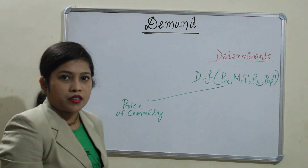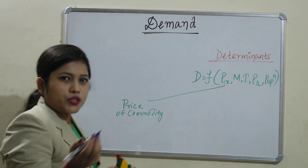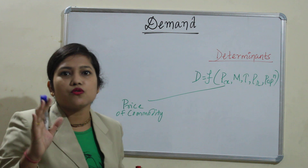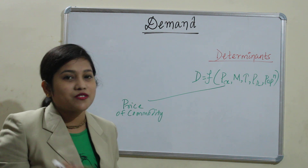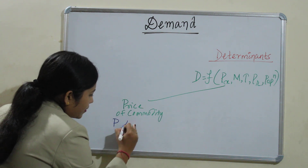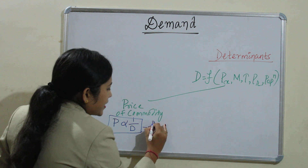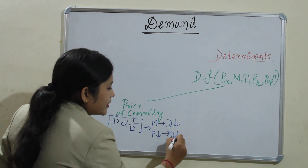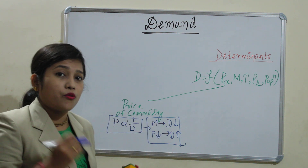The price of a commodity is what you pay for it. How does it affect demand? Suppose we take the example of Uncle Chips. When Uncle Chips is priced at 15 rupees, you buy one or two packets. But when the price decreases to 10 rupees, you will prefer to buy more. So price of commodity affects demand inversely — when price increases, demand decreases, and when price decreases, demand increases.